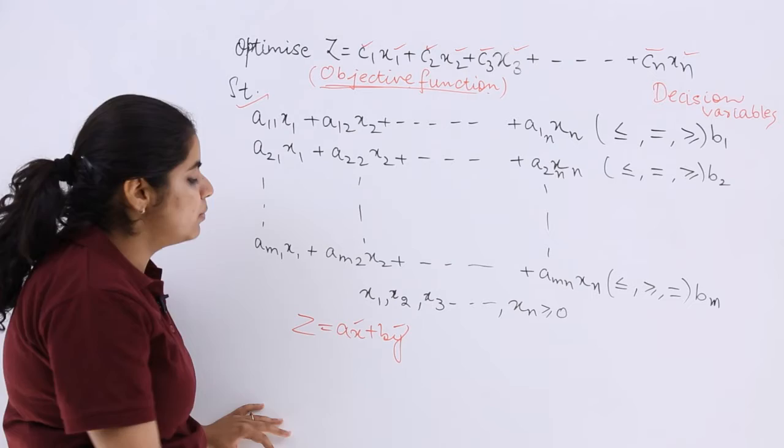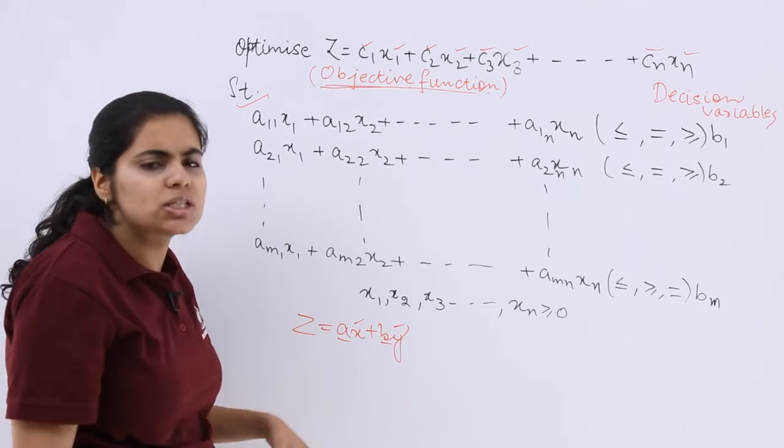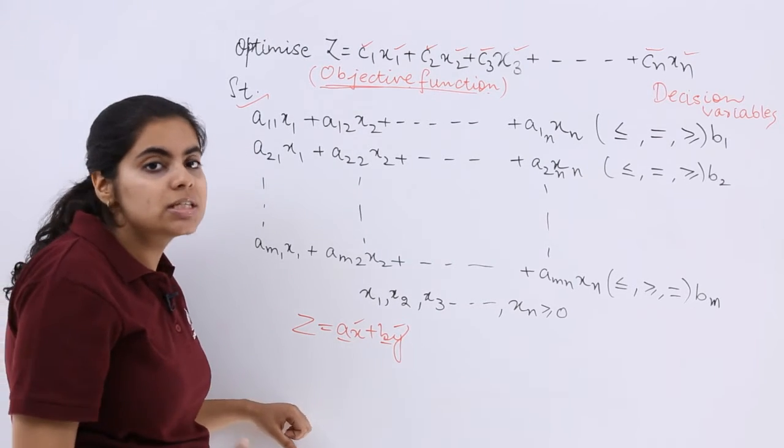Like z equals ax plus by is your function, which is known as your objective function. x and y are your decision variables, a and b are your constants. Then there are certain conditions, certain restrictions.